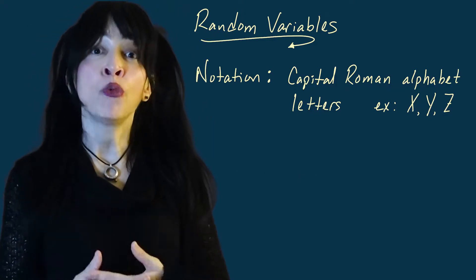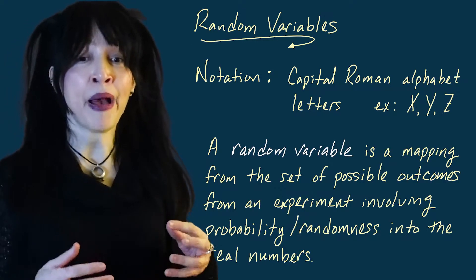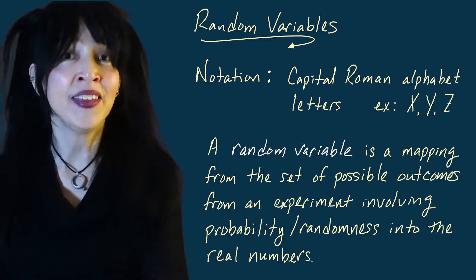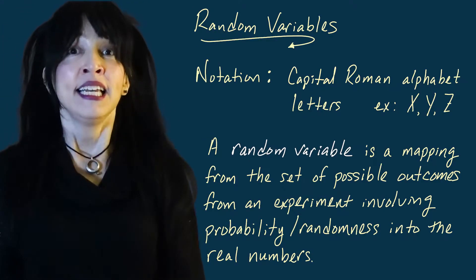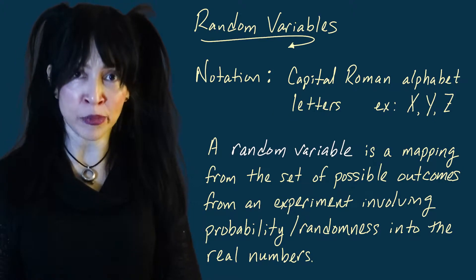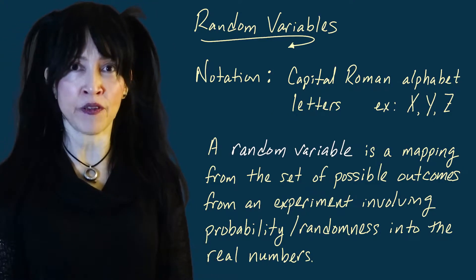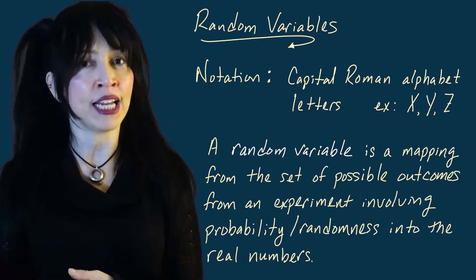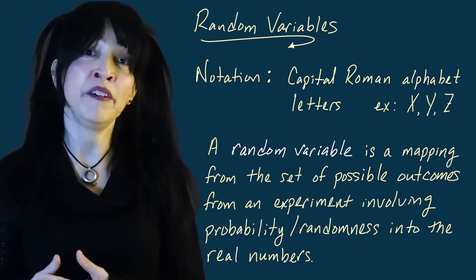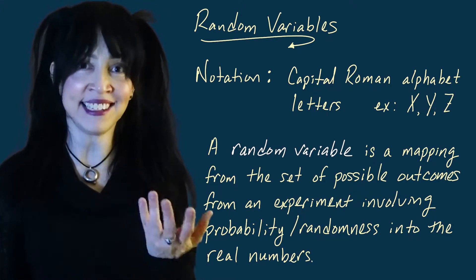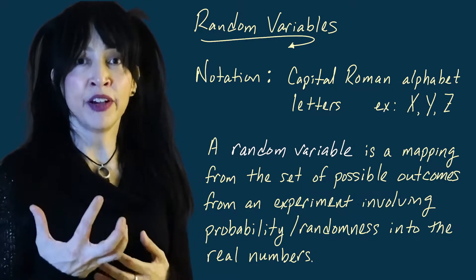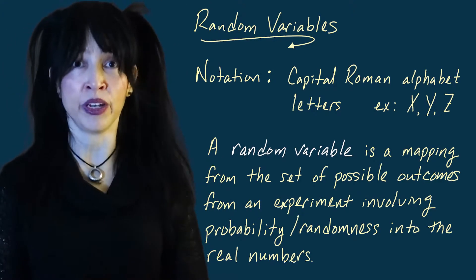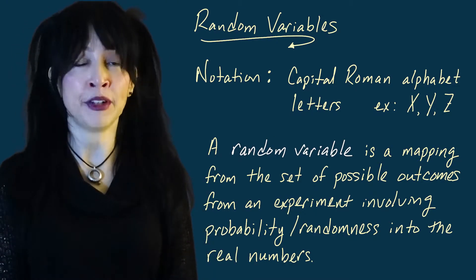A random variable is a function. It is a mapping. It takes things from one set into another. The set that it starts in is a sample space — the set of all possible outcomes for a probability experiment. So it takes an outcome — it might be rolling a die, or flipping a coin where the outcomes are heads and tails — and this function gives you back a real number.